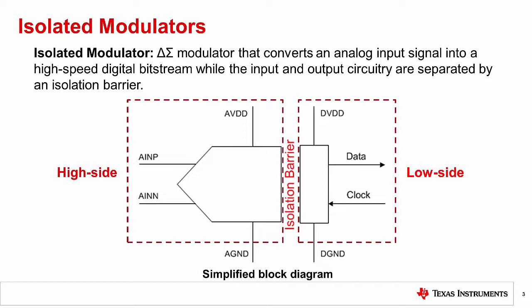In other words, isolated modulators protect one ground from another, isolate certain parts of the same circuit, or separate different circuits from each other.